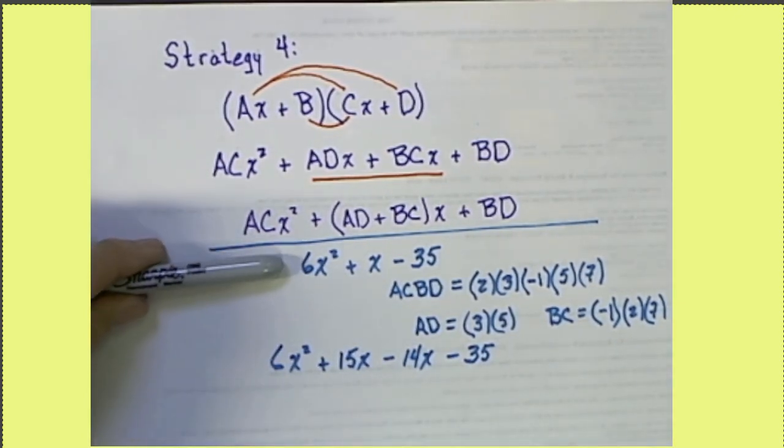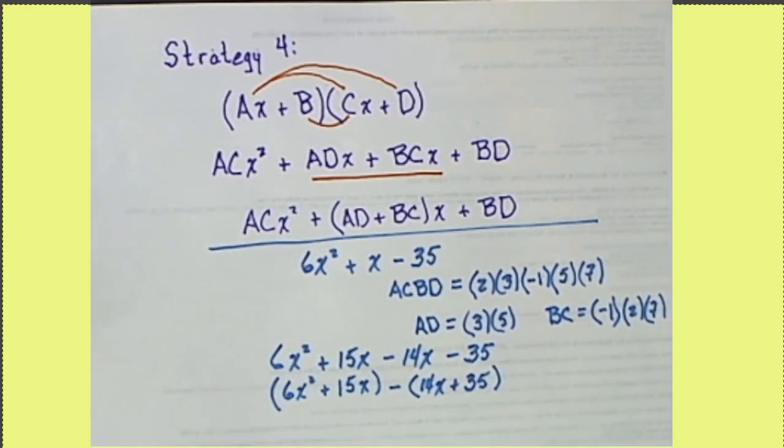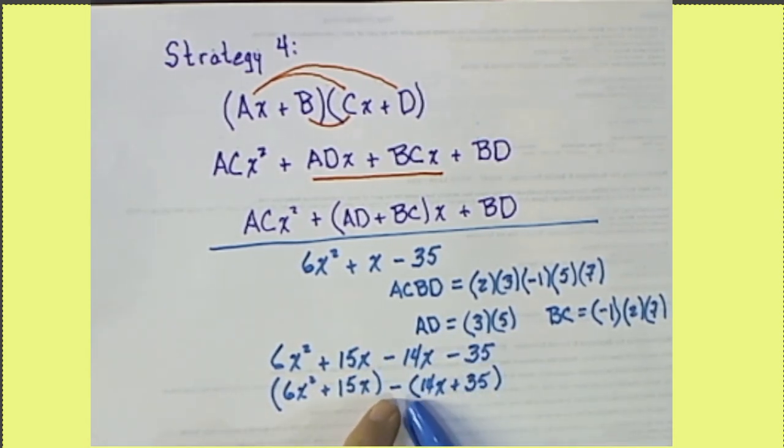So this object that we're trying to factor, this quadratic, can be rewritten like this. That can be grouped like this. Now be careful with how you're using these parentheses and these minus signs.